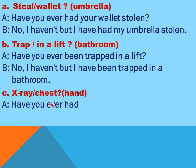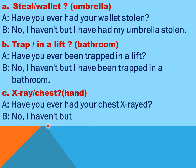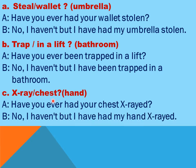For the x-ray example: A says 'Have you ever had your chest x-rayed?' B says 'No, I haven't, but I have had my hand x-rayed.' Here 'hand' is the object noun and 'x-ray' is the past participle.